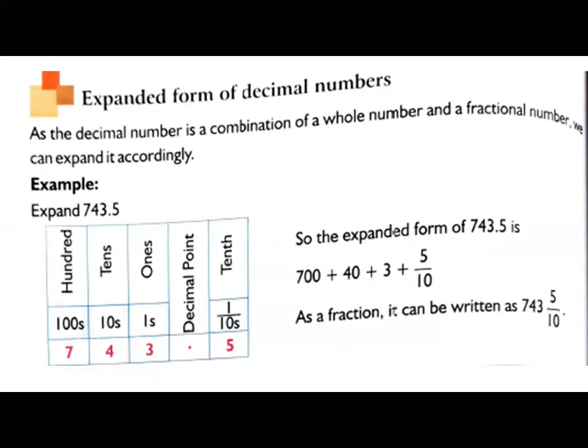After decimal point, what will come? Decimal place value. What is the first decimal place value? Tenth. So here they have given one digit. So tenth. So 5 is in tenth position.